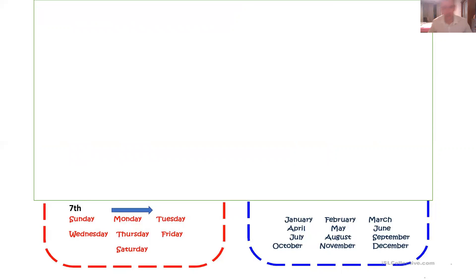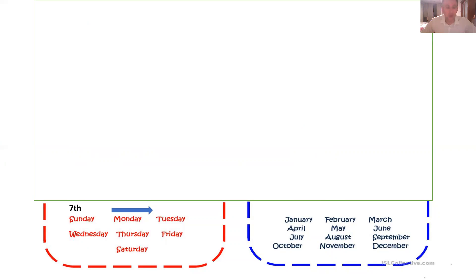Now you can count with cardinal numbers and ordinal numbers, and I think you understand clearly that it's different — the way is different. Now let's take a look at the days of the week. I think it's a review because you know it already. Monday, Tuesday, Wednesday, Thursday, Friday, Saturday, Sunday. In order, you start with Monday and finish with Sunday, obviously.